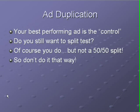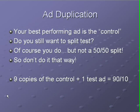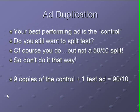So don't do it that way. Nine copies of the control ad plus one test ad will give you a 90-10 split. It's very simple. You go into your ad group, click the button to create a new text ad, and just make copies — identical ads with the exact same content. When you have nine copies of your control, then you can add your test ad. That gives you 90% of your ad impressions going to your best performing ad and only 10% going to the test ad, which reduces your risk quite a bit.